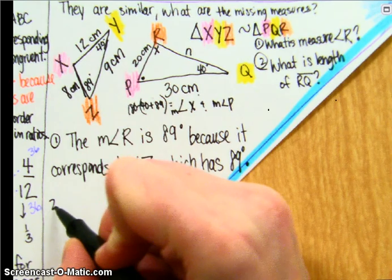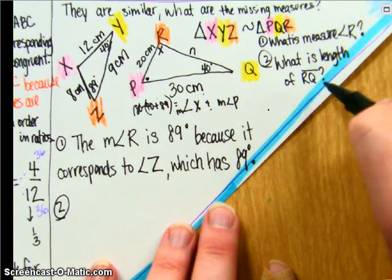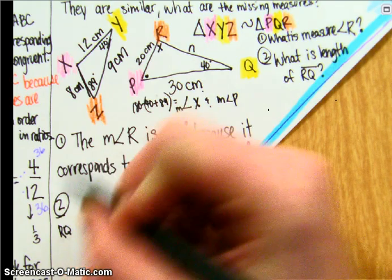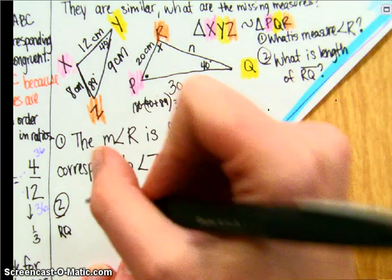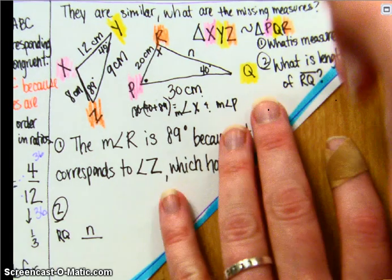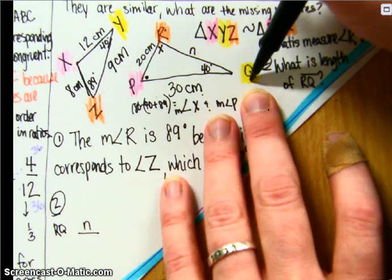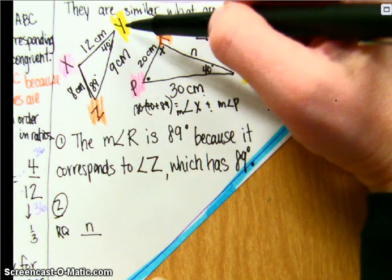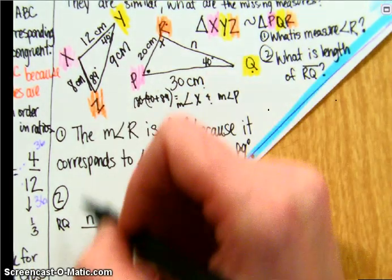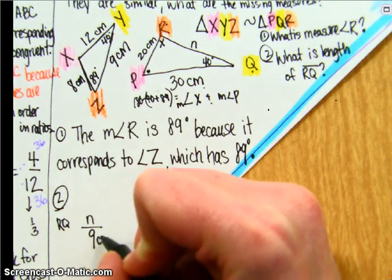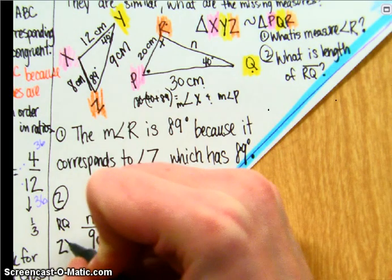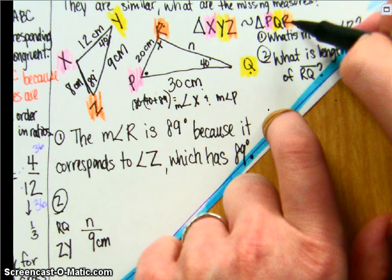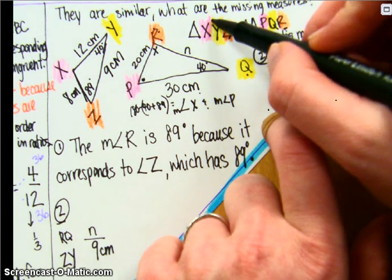For question two, what is the length of RQ? Well, let's deal with RQ first. RQ is our variable. We don't know the measure for RQ. We're going from orange to yellow. So looking over here, from orange to yellow, the measure on this triangle is Z to Y, 9 centimeters. R to Q, so Z to Y.